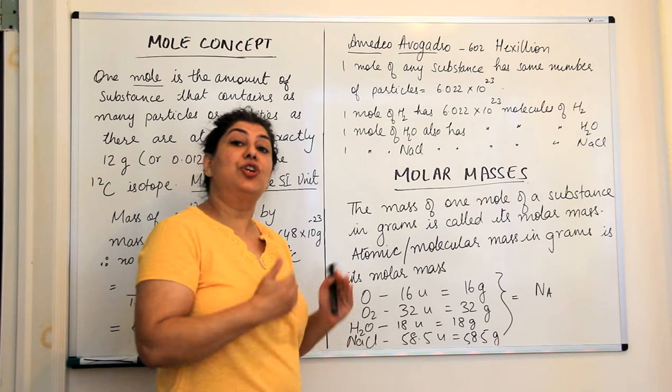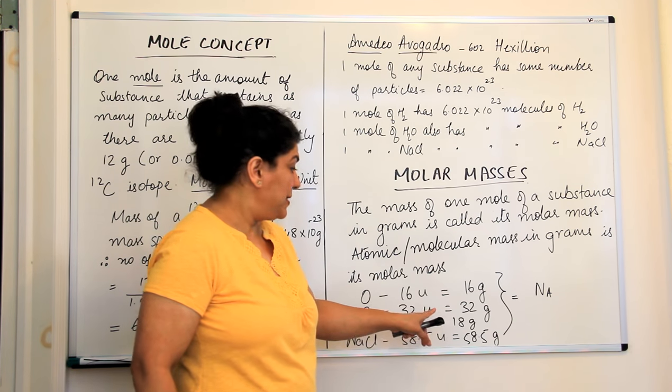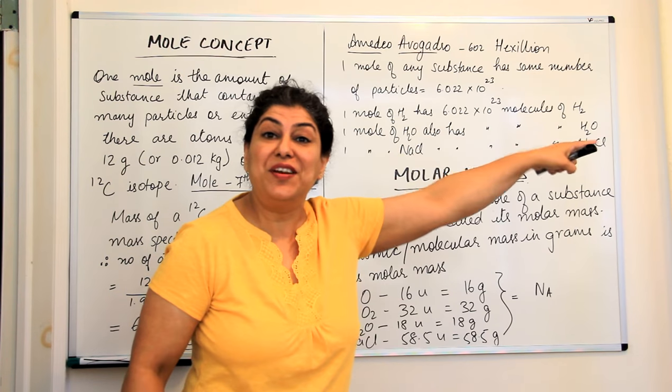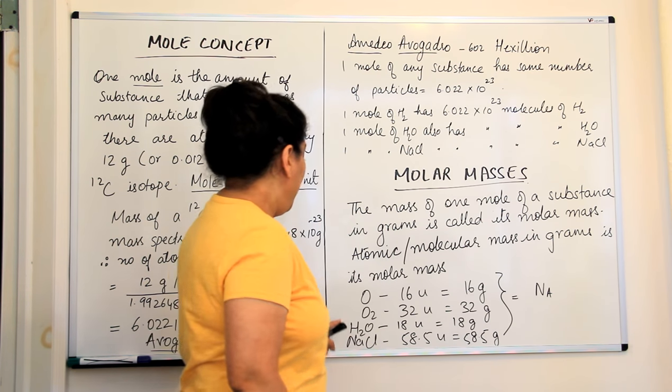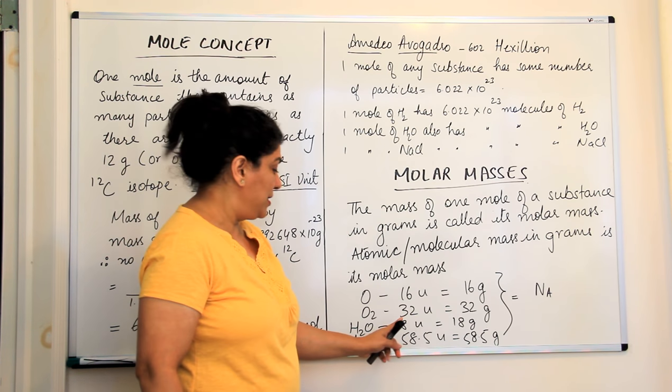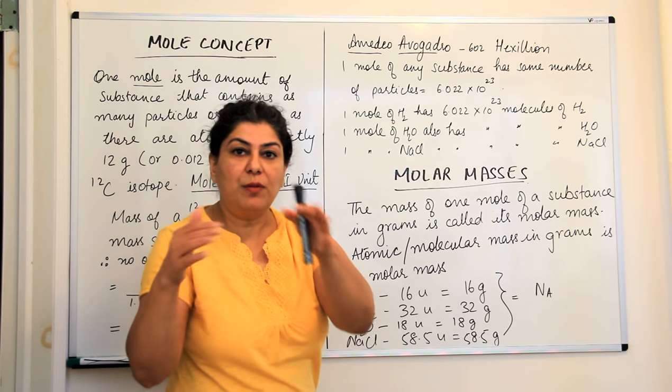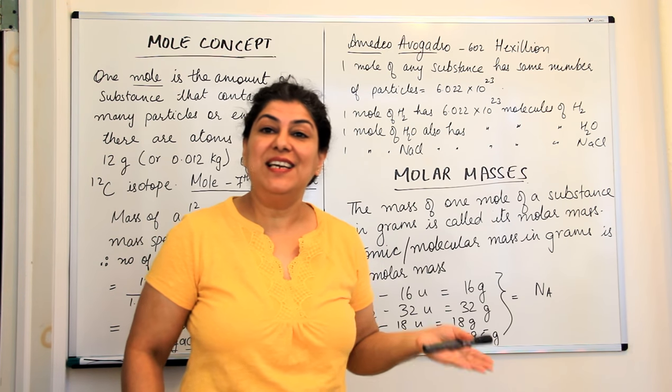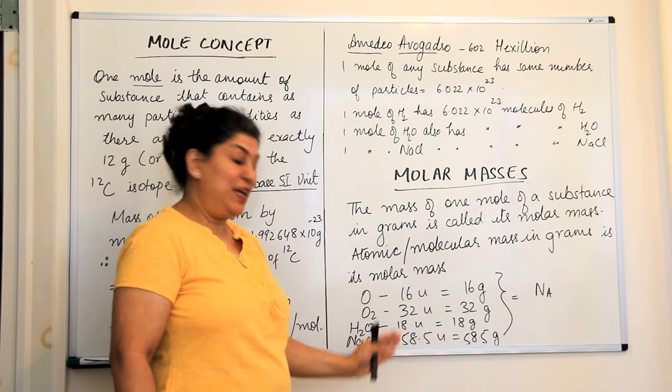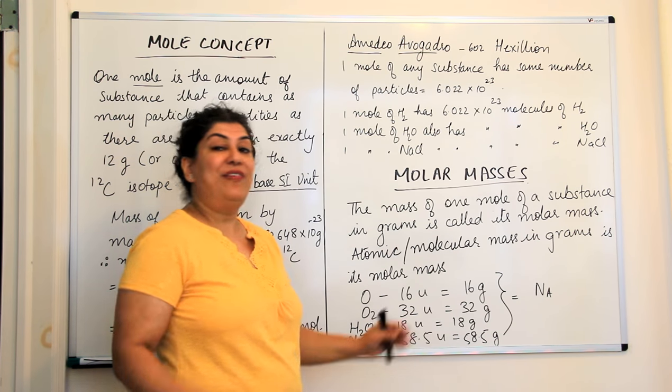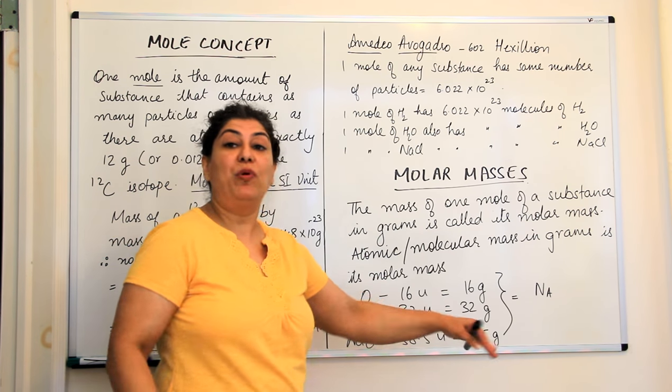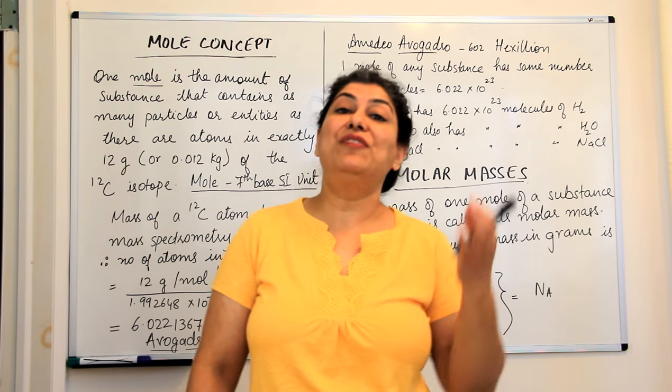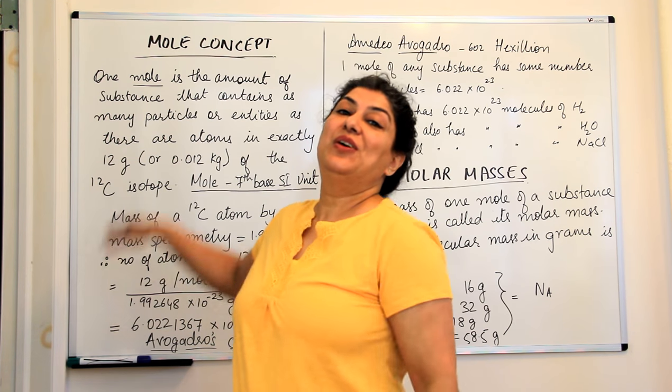Similarly, if you had 1 mole of oxygen molecules, it would be 32 unified masses and this would be equal to 32 grams and it would have 6.022 into 10 to the power 23. If you have water, 18 atomic mass units, instead of atomic mass units, take 18 grams of water. Count the number of molecules, it will be equal to 6.022 into 10 to the power 23 and what is that quantity? It is 1 mole of water. Sodium chloride, take formula units of sodium chloride, 58.5 is the mass of one formula unit. Take it in grams, 58.5 grams would have how many formula units of sodium chloride? It would have 6.022 into 10 to the power 23 formula units of sodium chloride which is equal to 1 mole.